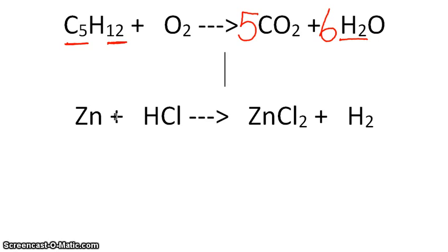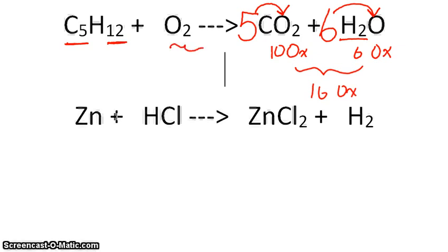Now we need to count the oxygens. On this side I have 5 CO2 molecules and each CO2 molecule has 2 oxygens in it, so that means I have 10 oxygen. And I have 6 waters and each water has 1 oxygen which means I have 6 oxygen in this molecule for a grand total of 16 oxygen. Now O2 gas comes with 2 oxygens per gas molecule, so I need 8 O2 molecules to have 16 oxygens. So I should have a balanced reaction there.